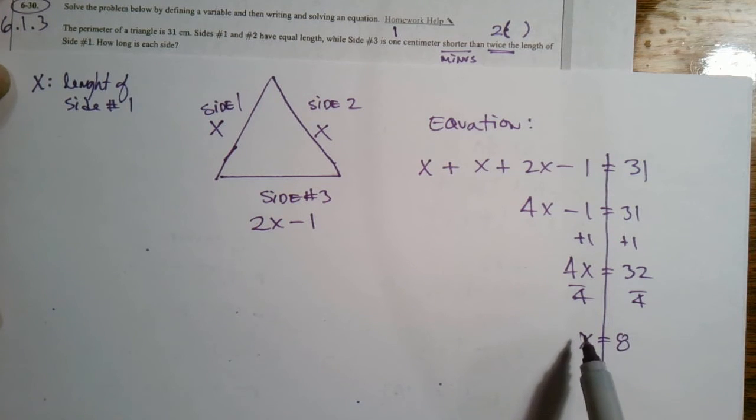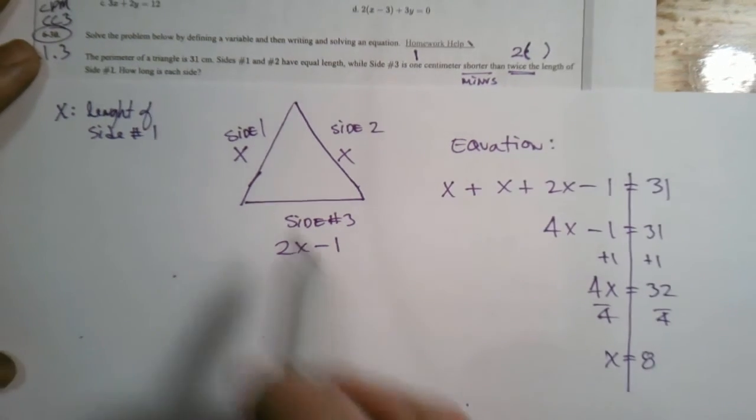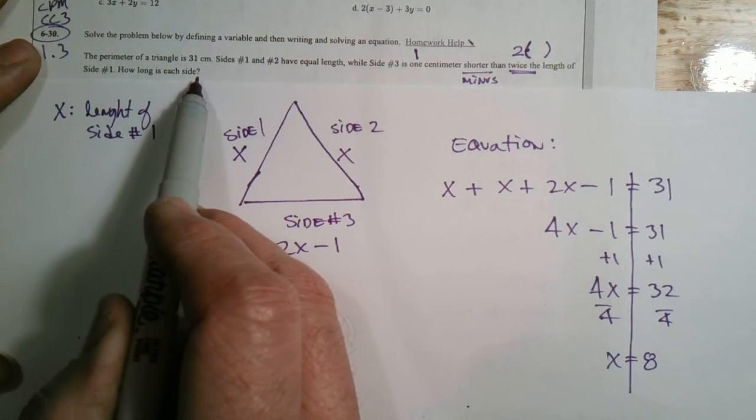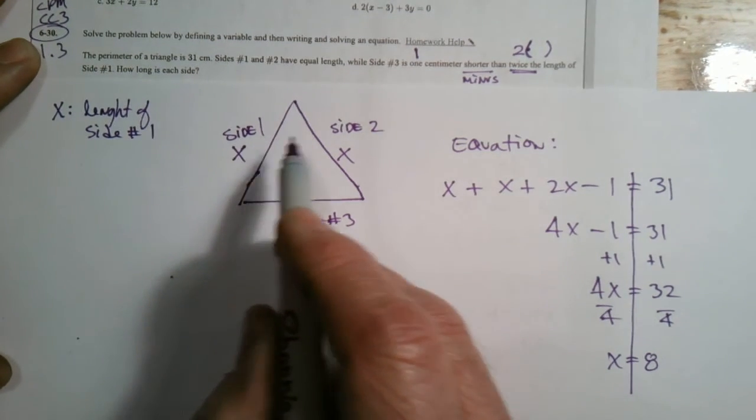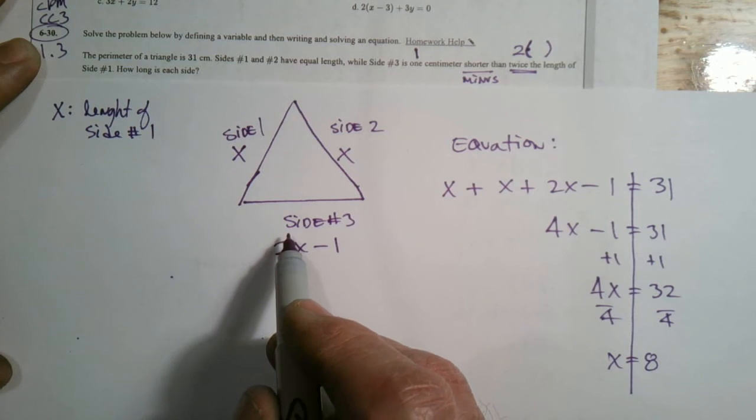So I got my x, but I'm not done because I got to answer the question. I got to declare what is going on here. So how long is each side? Well, x is 8. So now I can just plug in 8 for each of the sides.